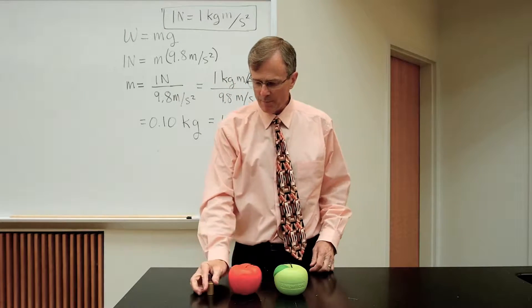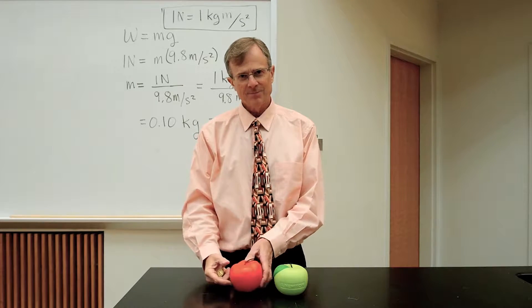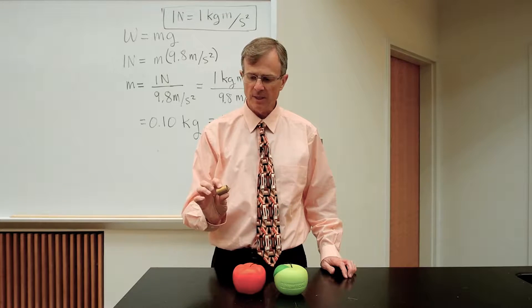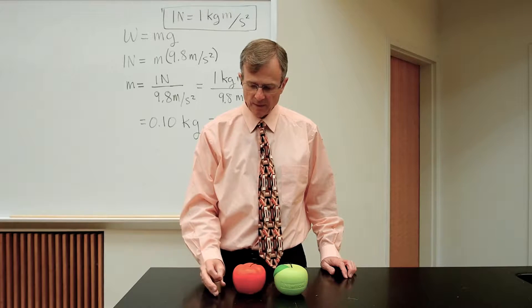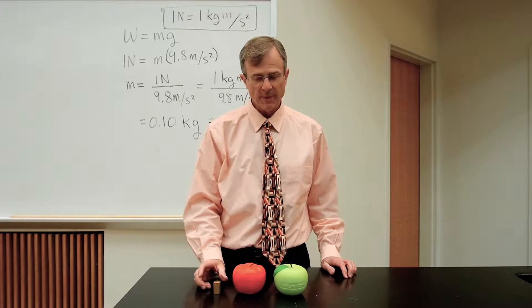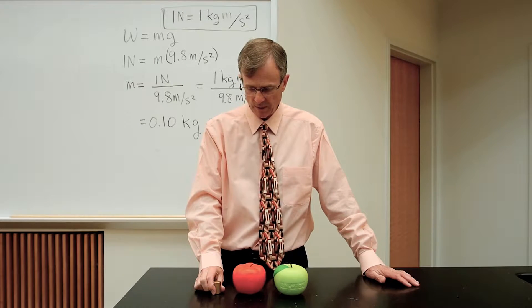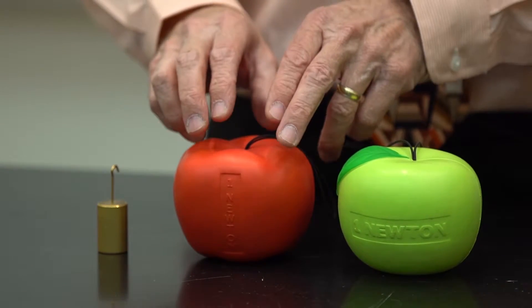So the mass equivalent of a 1 newton weight is 100 kilograms. This is a 100 kilogram mass, and at the Earth's surface—I'm sorry, 100 gram, not 100 kilogram—a 100 gram mass weighs 1 newton.